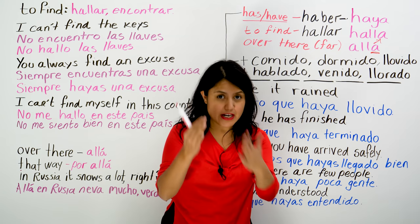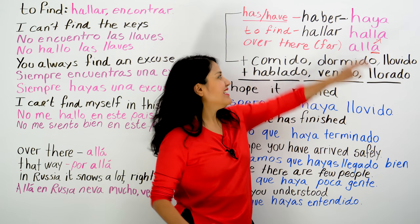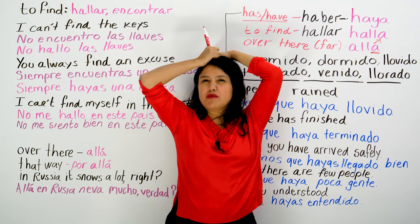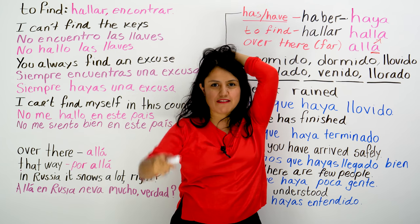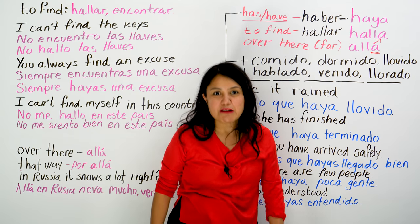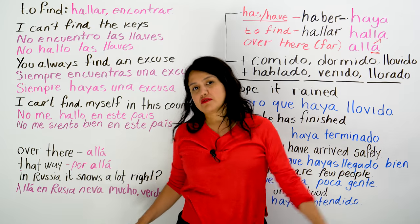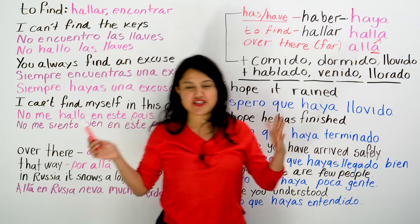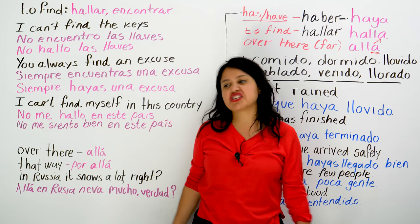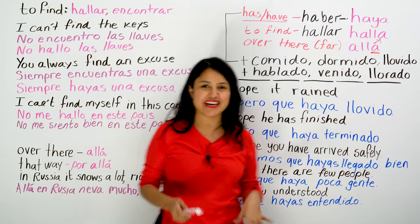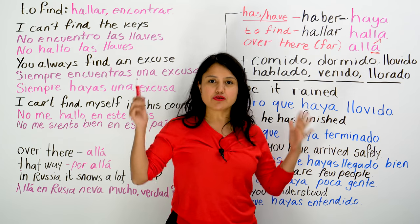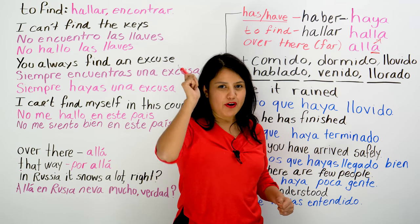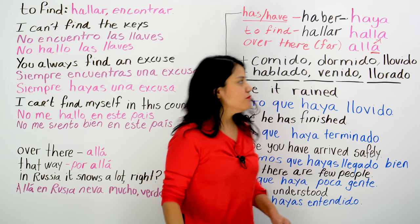Many of you confuse these words, especially — especialmente — las primeras dos, the first two. You don't know which one is with Y and which with double L. Don't be ashamed, because native speakers actually make gross, horrible mistakes with these words. So don't feel bad. But not anymore, because today you're going to learn the difference and how to use them correctly, how to write them correctly, how to teach people how to write them and tell them why. Muy bien.